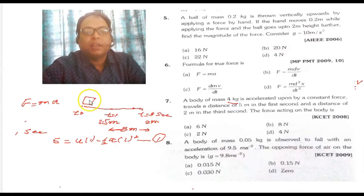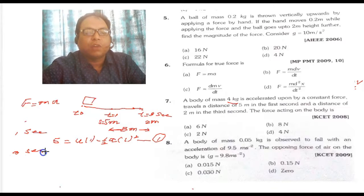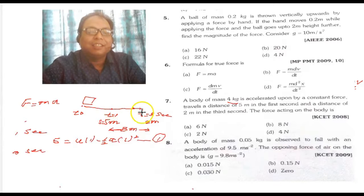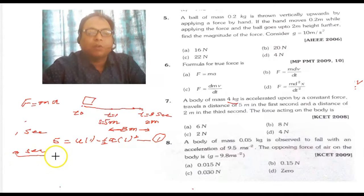Now let's move to the next condition. If we're talking about 3 seconds — actually, we're talking about the distance traveled between 1 to 3 seconds. The distance to travel between t=1 and t=3 is 3 meters.